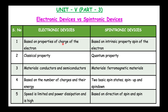The first difference is the property of charge of the electron — a purely electronic device depends upon the charge of an electron, whereas in spintronics it depends upon the spin of the electron. The second difference is that electronic devices have classical properties, while spintronics uses quantum mechanical properties, especially the tunneling property.